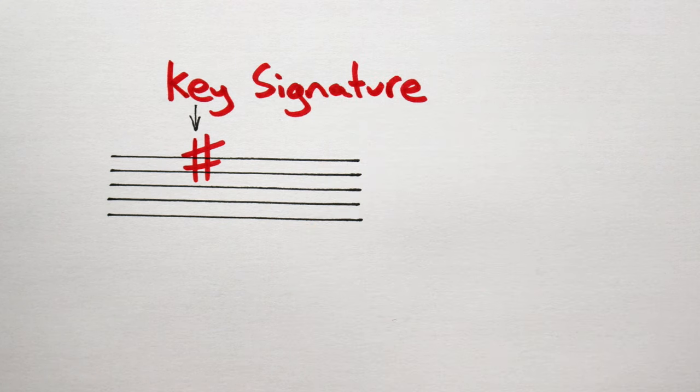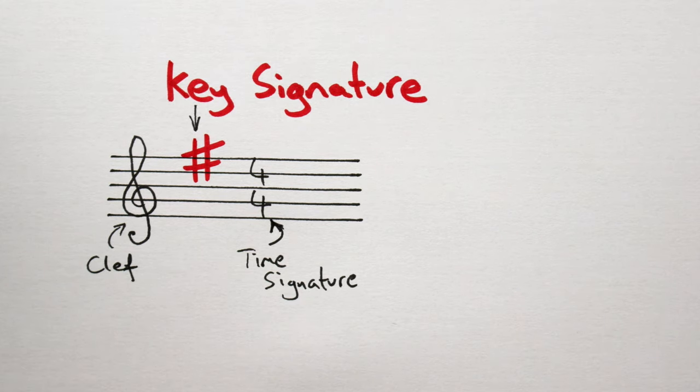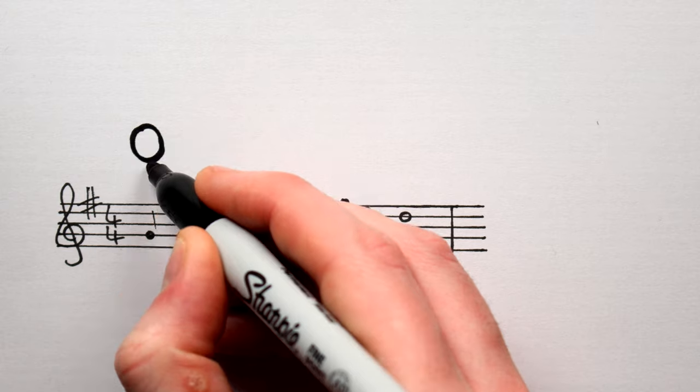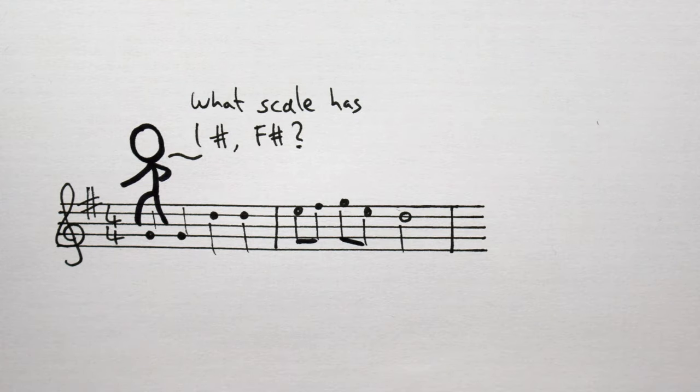Key signatures are always placed between the clef and the time signature. And they tell us two very important things. The key of the piece. And what sharps or flats to play. The key is easy. Just look at the key signature and try to figure out what scale has the same accidentals as is shown in the key signature.